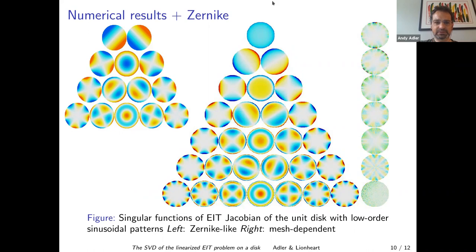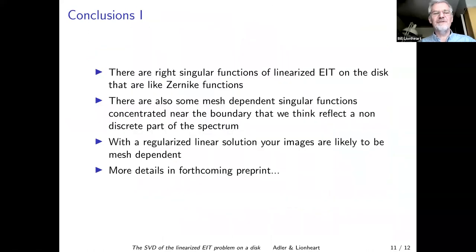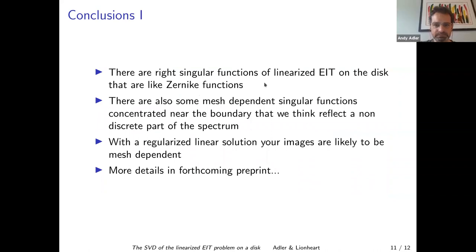This reflects what we're calling a push to the boundary, where EIT takes the Zernike shapes and pulls it towards the boundary because EIT of course as we know is much more sensitive to the boundary than it is to effects in the center. Some conclusions. The right-singular functions of linearized EIT are a bit like Zernike functions but we need to find their explicit form. There are some mesh dependent singular functions that concentrate near the boundary that we think reflect the non-discrete part of the spectrum.